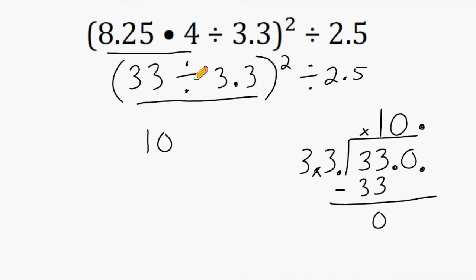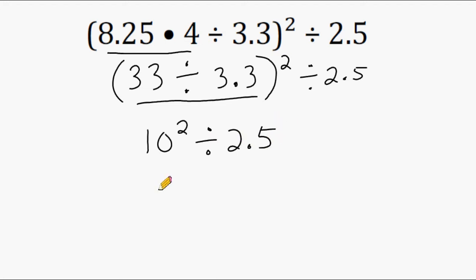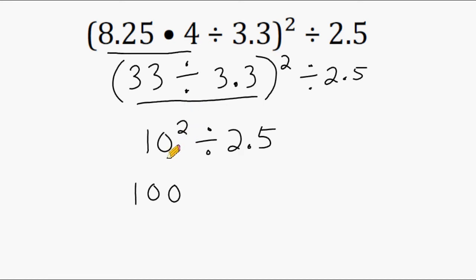Now we have to take this 10 and raise it to the second power, and after that we are going to divide that answer by 2 and 5 tenths. 10 to the second power is equal to 100. Make sure that you do not multiply the base times the exponent — that would give you 20, and you should never do that. The exponent just tells you how many times to multiply the base by itself, and 10 times 10 is equal to 100.